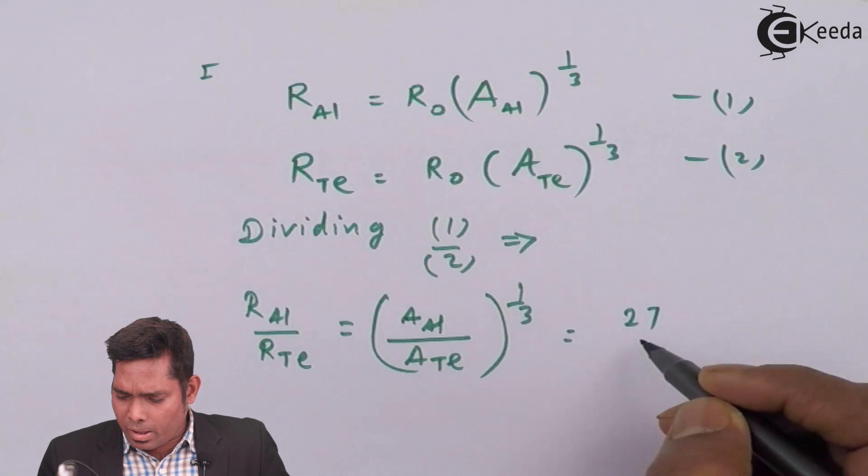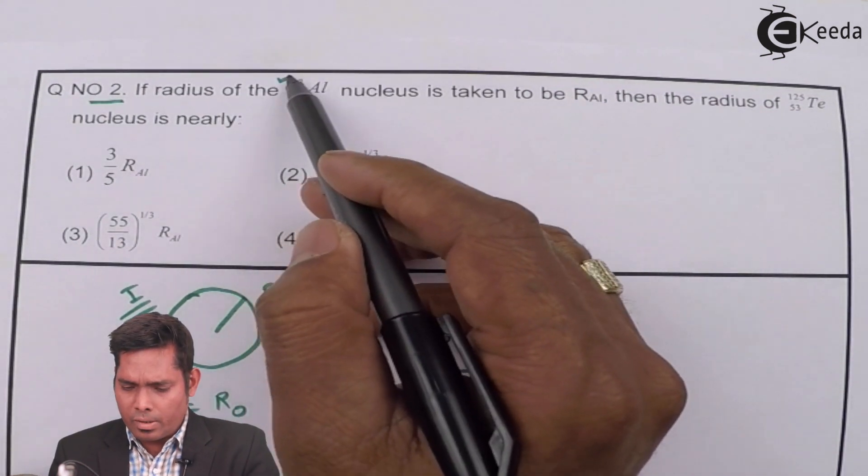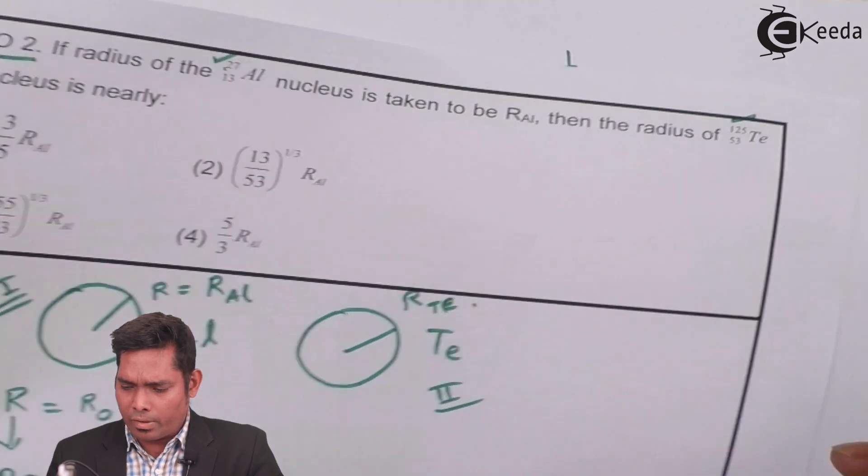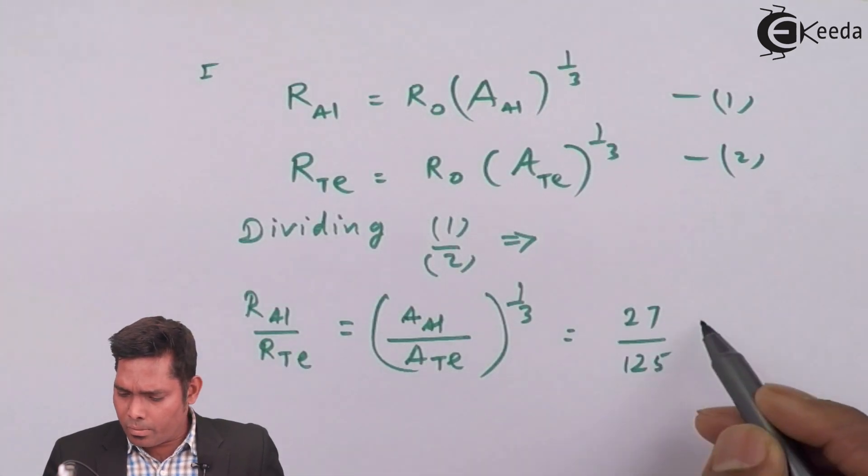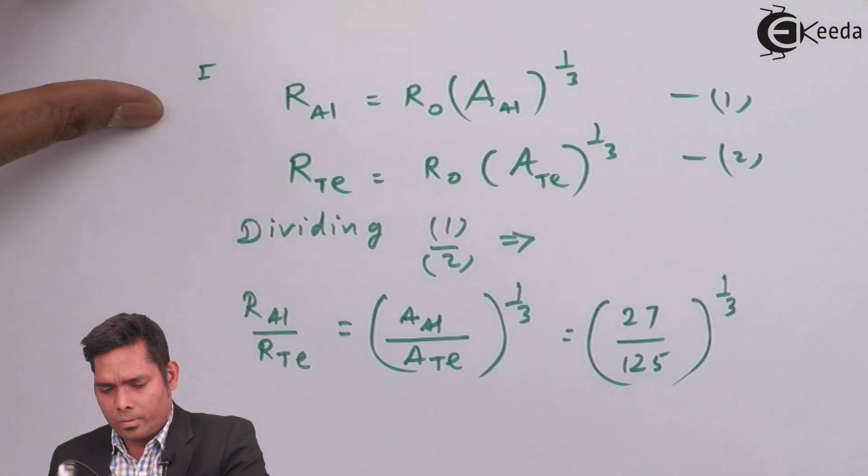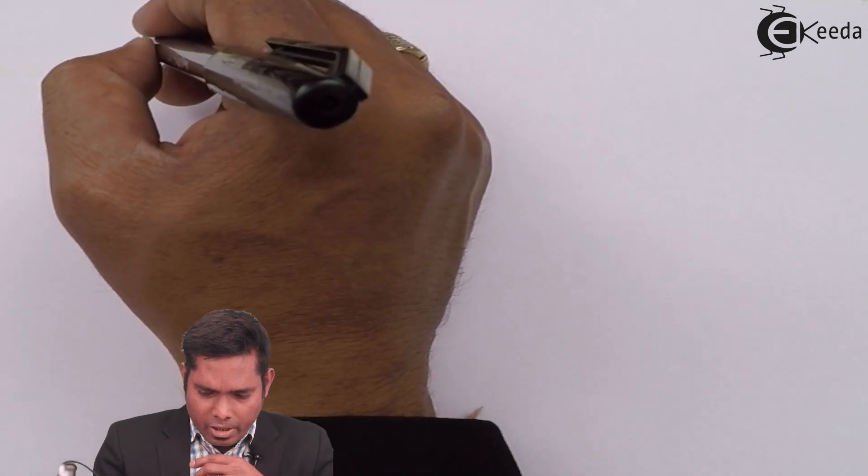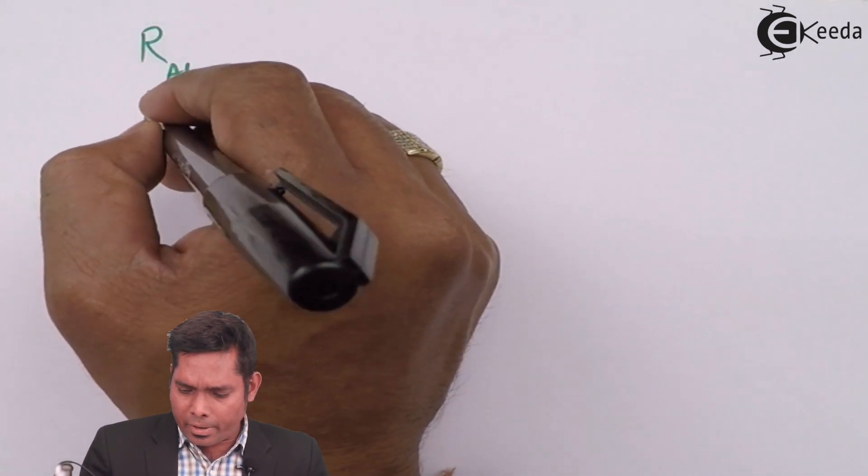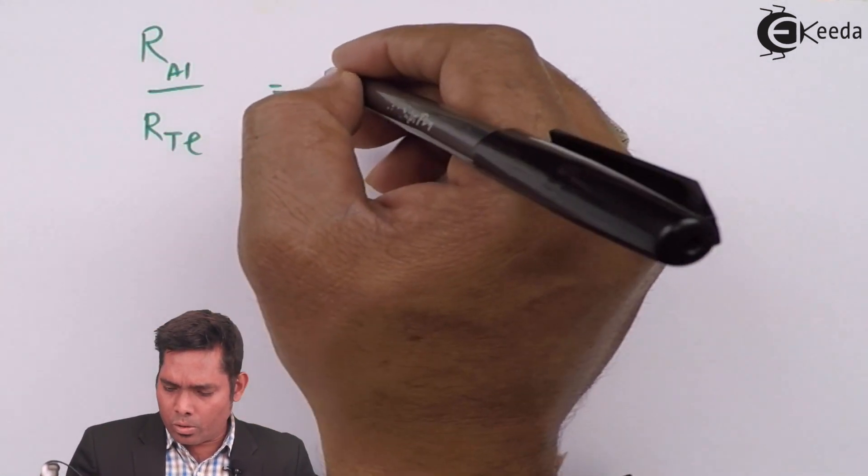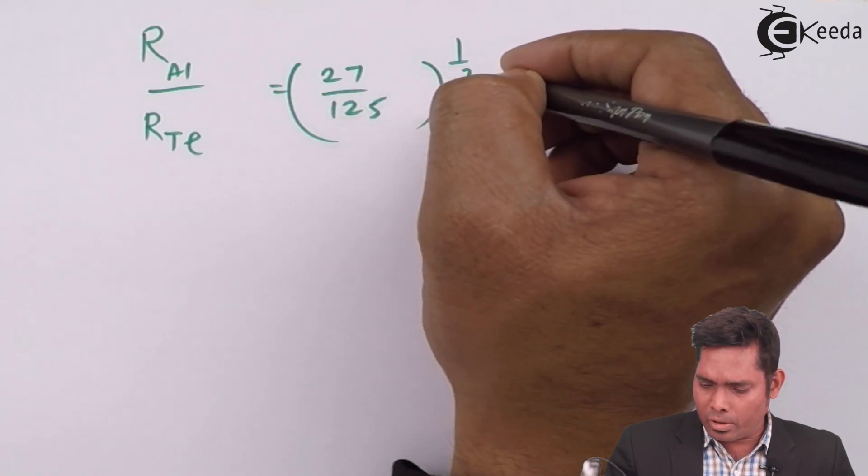Aluminum has mass number 27. You can see here, there is 27 here and this is 125 here. So 27 divided by 125 to the power one by three. Radius of aluminum divided by radius of Te equals to 27 divided by 125 to the power one by three.